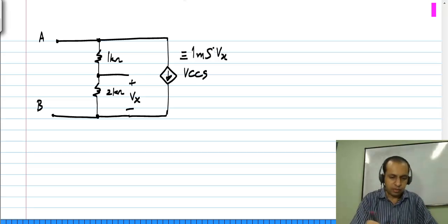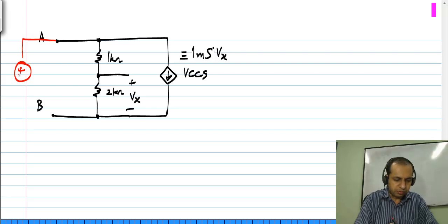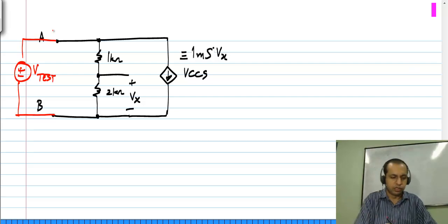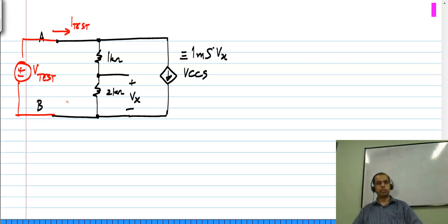This is the standard way for finding the equivalent for any circuit: apply a voltage and measure the current. Of course, you could apply a current source and find the voltage. In this case I will consider applying a voltage.